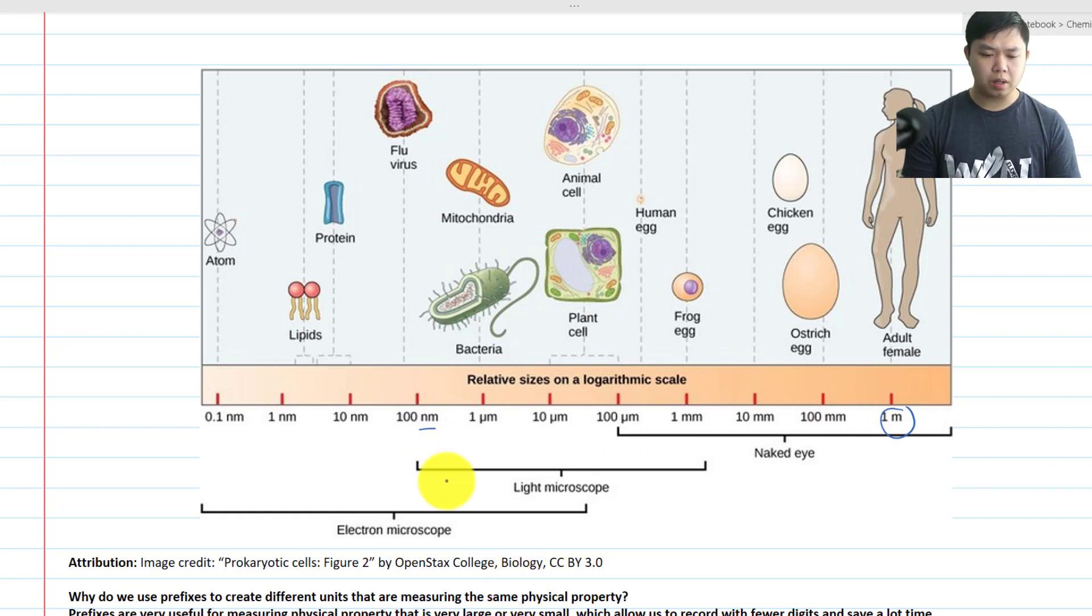So we have to use something in nanometer or micrometer. And that's the reason why we have different prefixes of different values.